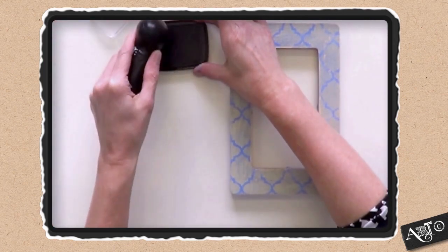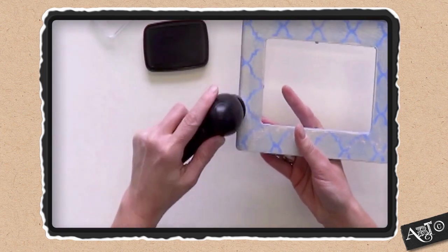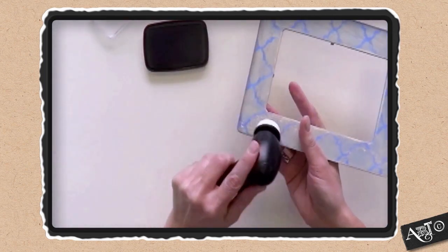Swirl the tip around on top of the ink pad until the sponge is covered. Next, gently guide the tip across your surface and repeat until it's finished.